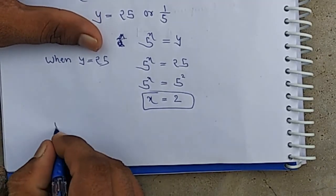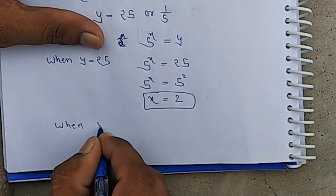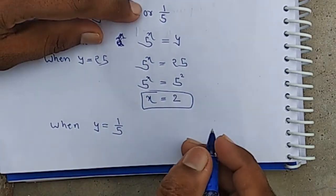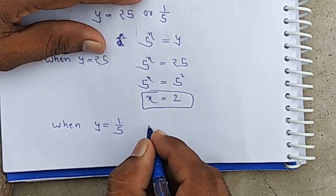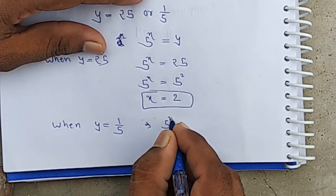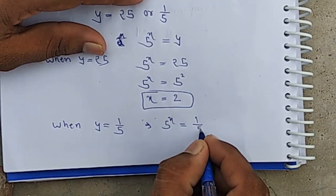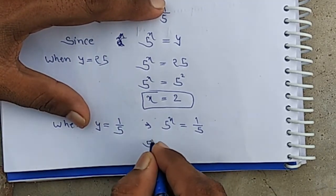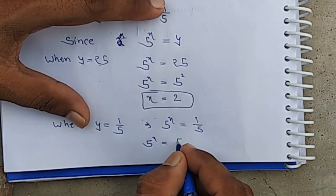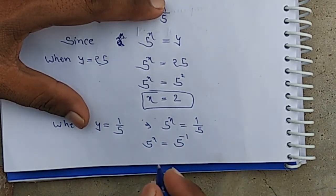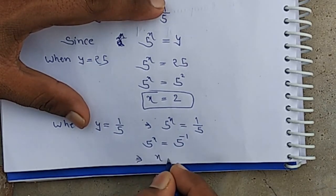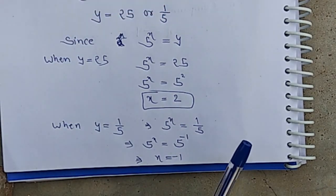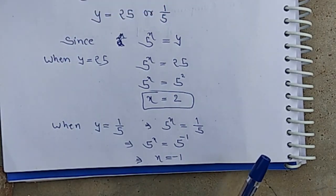When y equals 1 by 5, we have 5 to the power x equals 1 by 5, which can be written as 5 to the power minus 1. Therefore the value of x is minus 1. These are the answers.